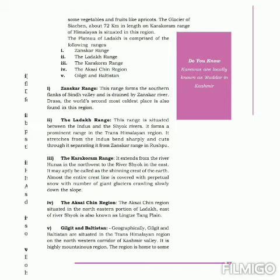Almost the entire crust line is covered with perpetual snow with a number of giant glaciers graveling slowly down their slopes. Yaini ki isse munasib toor par zameen ki shining crust kaha ja sakta hai. Takriban puri crust line daimi barf se dhaki hui hai, jis mein lambi chori glacieron ki tahedaar aahista aahista dalwaan se neeche khisak rahi hai.